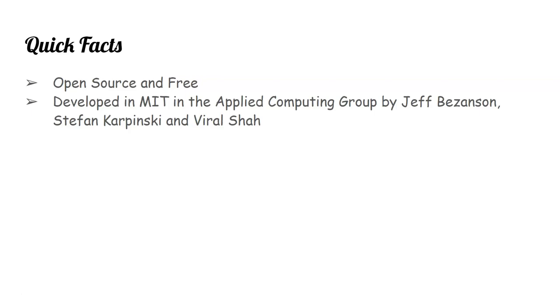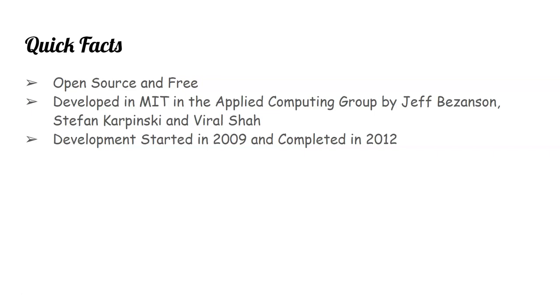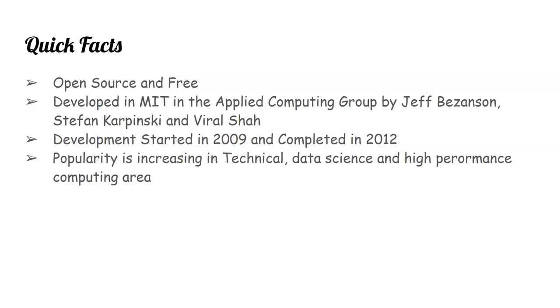Julia was developed at MIT in the applied computing group by Jeff Bezanson, Stephen Karpinski, and Viral Shah. Its development started in 2009 and completed in 2012, making it a relatively new language. Its popularity is increasing in technical data science and high-performance computing.